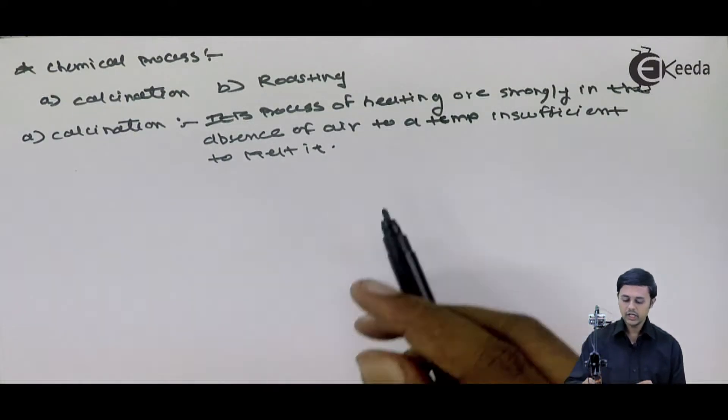I hope you now know the difference between calcination and roasting. Calcination is a process of heating the ore in a completely absence of air while roasting is heating the ore in a completely presence of air or completely presence of oxygen. So this is the difference between calcination and the roasting.